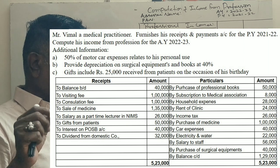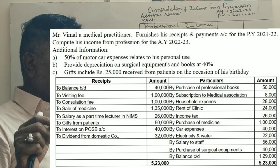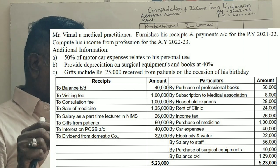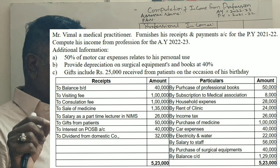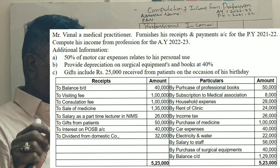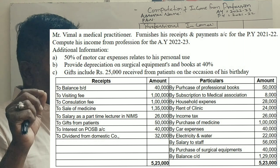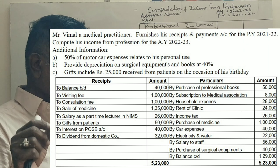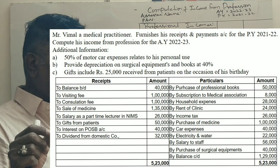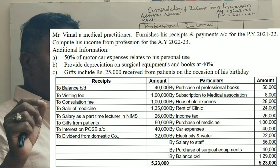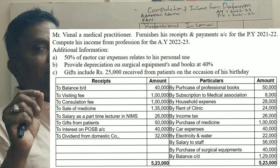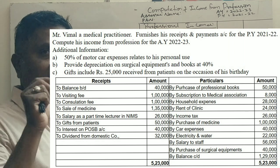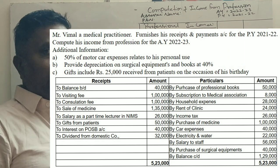Additional information: 50% of motor car expenses are related to personal use. Depreciation on surgical equipment and books is provided at 40%. Gift of 25,000 rupees was received from a patient on the occasion of his birthday. Now we look at receipts and payments.